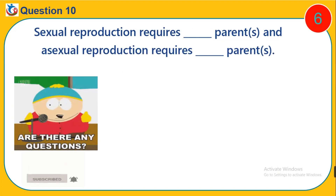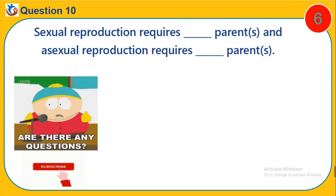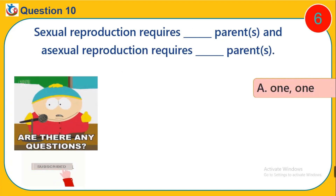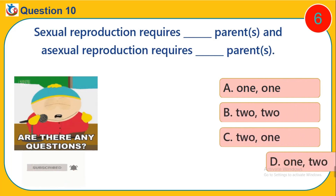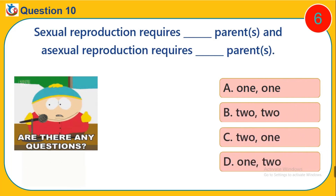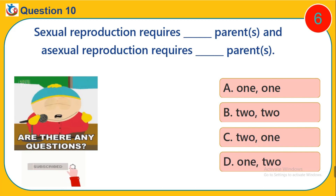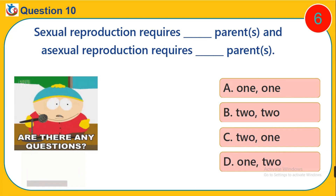Question 10. Sexual reproduction requires how many parents? A. One, one. B. Two, two. C. Two, one. D. One, two.